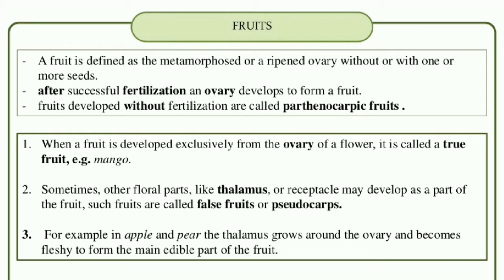Fruits developed without fertilization are called parthenocarpic fruits. Normally the ovary will develop into fruit — those are normal fruits. But in some fruits, development happens without fertilization. Such fruits are called parthenocarpic fruits, and those will be seedless fruits. Here, we have some types of fruits.